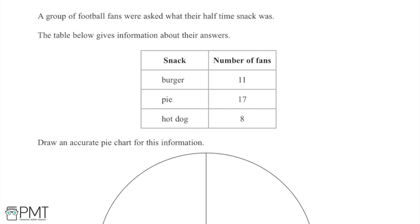And we're then asked to use this information to draw an accurate pie chart for all of this information here. Now in order to draw this pie chart we're going to have to work out what angle is going to represent each snack within the pie chart and these are going to have to sum to 360 degrees because there's 360 degrees in a circle.